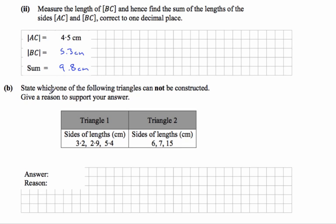Part B says state which one of the following triangles cannot be constructed. Give a reason to support your answer. Well, if a triangle can be constructed from the three sides, the two smallest sides must add up to something that's bigger than the biggest side. In other words, these two should add up to something bigger than 5.4.